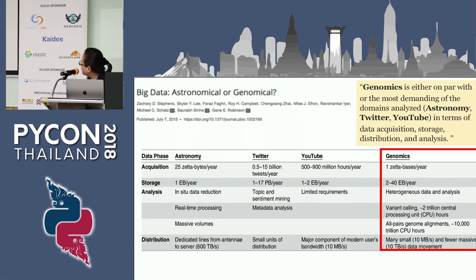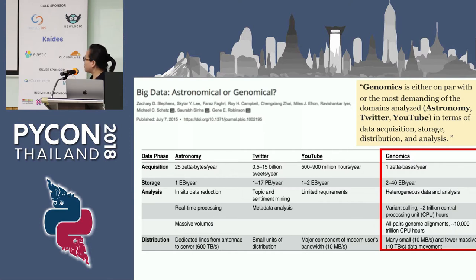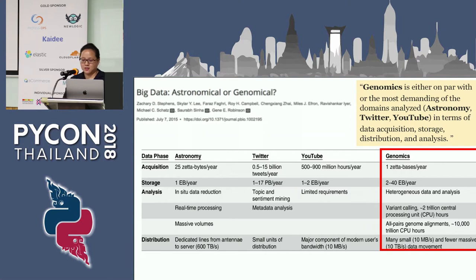Secondly, this data I obtained from a paper where researchers tried to project the estimated size of genomic data. They compare the rate of growth of genomic data with data from astronomy, Twitter, and YouTube. The conclusion from this research is that genomic data will be on par with — or more than — data generated from astronomy, Twitter and YouTube. So we are going to have a lot of genomic data.